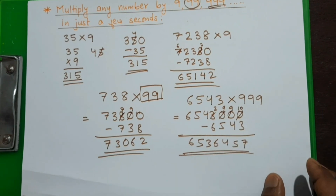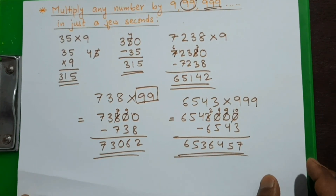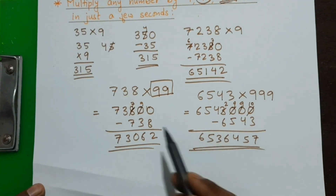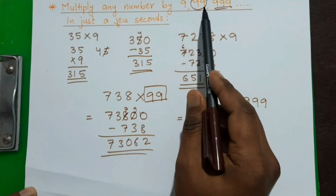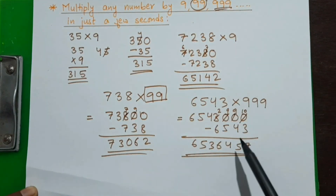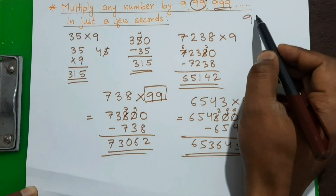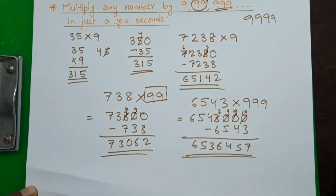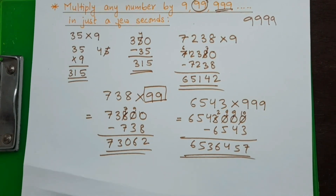Now you can try yourself by multiplying any number by 9, 99, 999, or even 9999 and so on. This method is very, very quick.